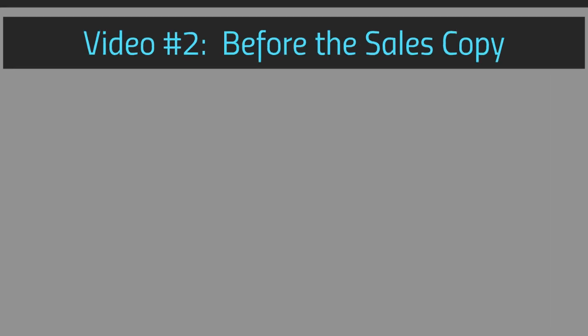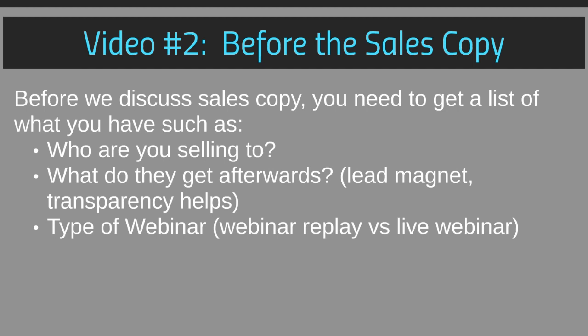Hello and welcome back. This is video number two — what you need to have in hand before we talk about sales copy. You need to get a list of what you have: who are you selling to, what do they get afterwards, do they get a lead magnet — something you give away for free to gain somebody's email address? Is it inside the webinar or downloadable immediately? What I've found over the years is that transparency helps — letting people know upfront what they get on the other side actually helps conversions.